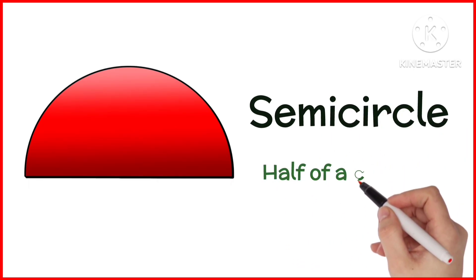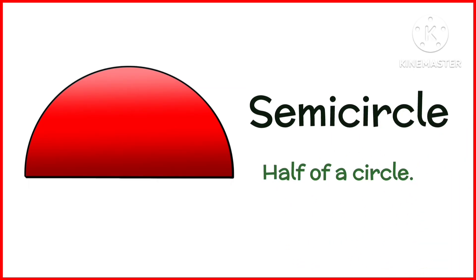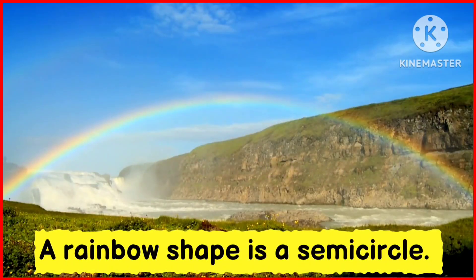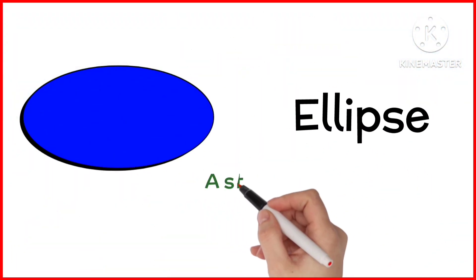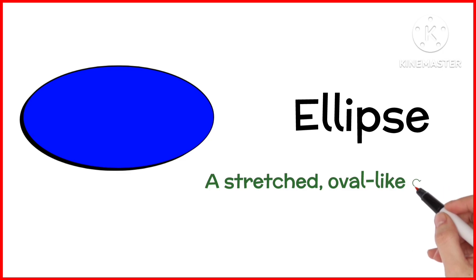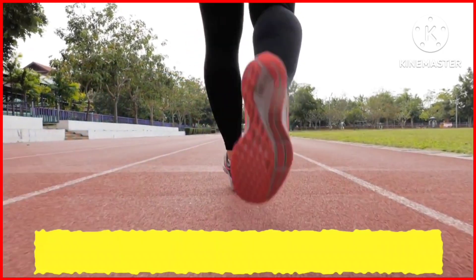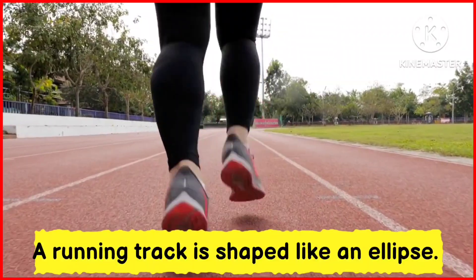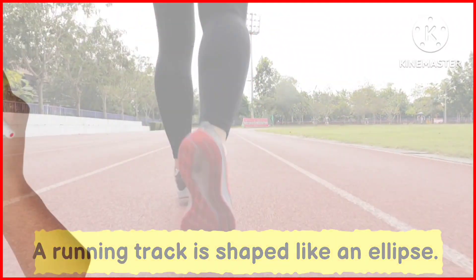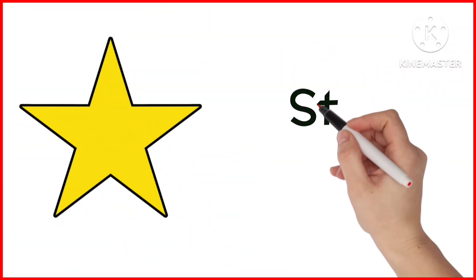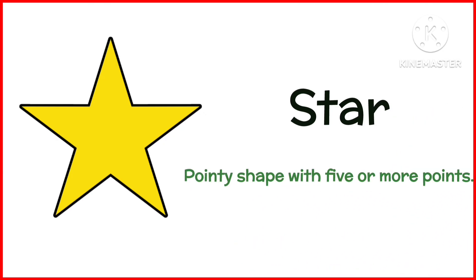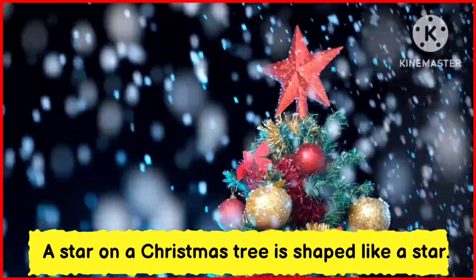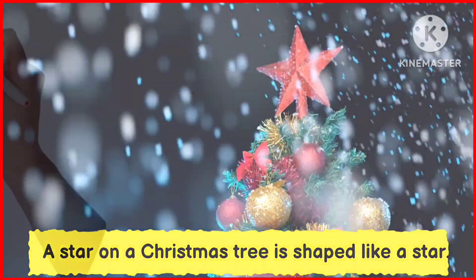Semicircle. A semicircle is half of a circle. A rainbow shape is a semicircle. Ellipse. A stretched oval-like circle is an ellipse. A running track is shaped like an ellipse.